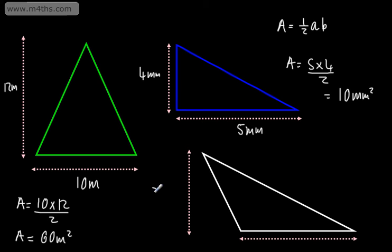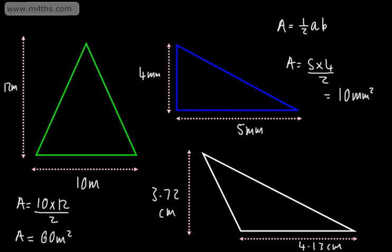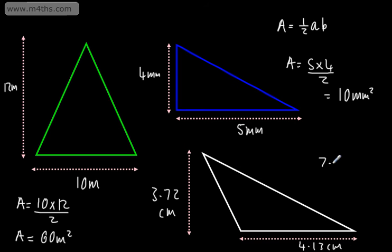Let's say this was 3.72 centimeters and this one was 4.13 centimeters. We would simply plug this into a calculator — 4.13 times 3.72 then divide by 2. That gives us 7.68, so the area is 7.68 centimeters squared, given to 3 significant figures.